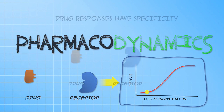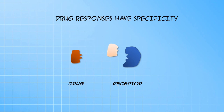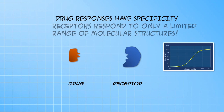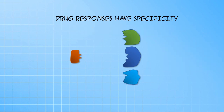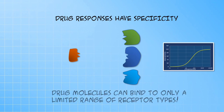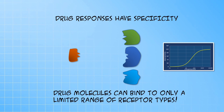Now we say that the drug interacts specifically with its receptor because each receptor only allows a very limited range of molecules to activate a response. Specificity also refers to the fact that drug molecules can only activate a limited range of receptor types. Now some receptor interactions are highly specific while others are less so, but we won't bother with that now.